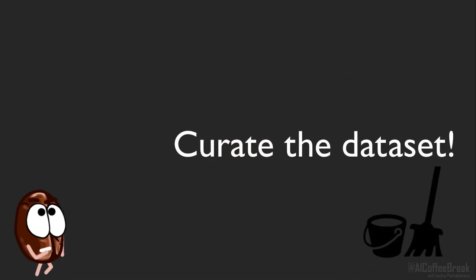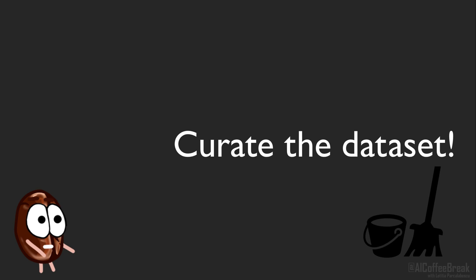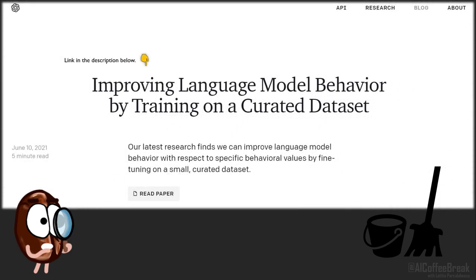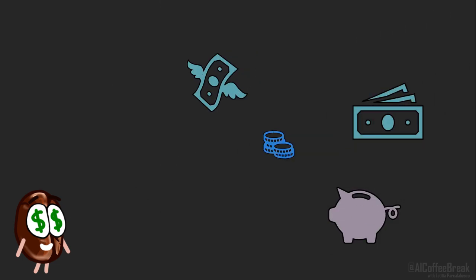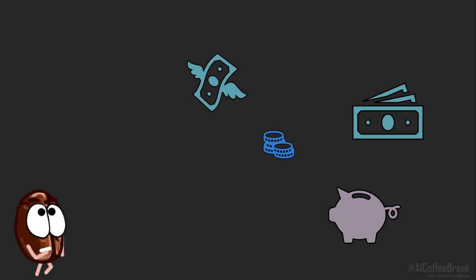What to do to fix toxic model behavior? What people did so far, especially for ImageNet, was curate the dataset. For text, OpenAI released a better version of GPT-3 called InstructGPT, by fine-tuning GPT-3 on a curated dataset. Curating datasets is one solution, but you can imagine how laborious and costly it can be to annotate datasets. The larger the model, the larger the datasets, and dataset curation with little curated data can only get you so far. So what to do to create fairer models if dataset curation is so expensive?